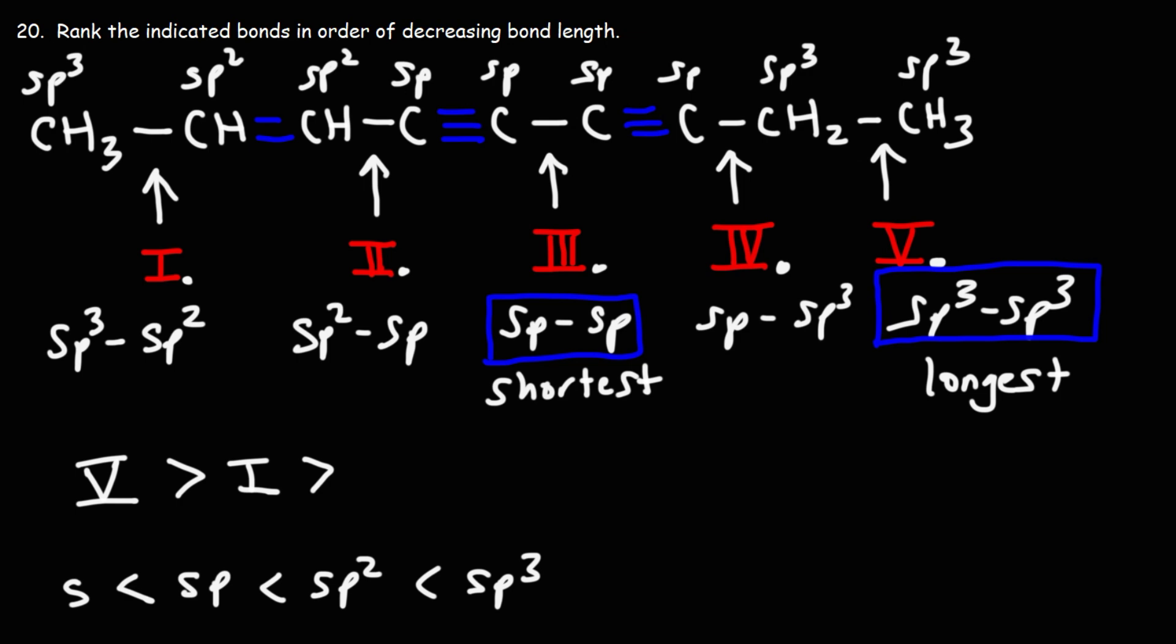And then if we compare number two and number four, which one is longer? Well, sp is the same, so comparing sp3 with sp2, sp3 will be longer. So bond number four is longer than bond number two. And we know bond number three is the shortest. So that's how we could rank it in order of decreasing bond length. We have number five being the longest. Number one is the second longest. Number four is the third longest. Then number two. And number three is the shortest.